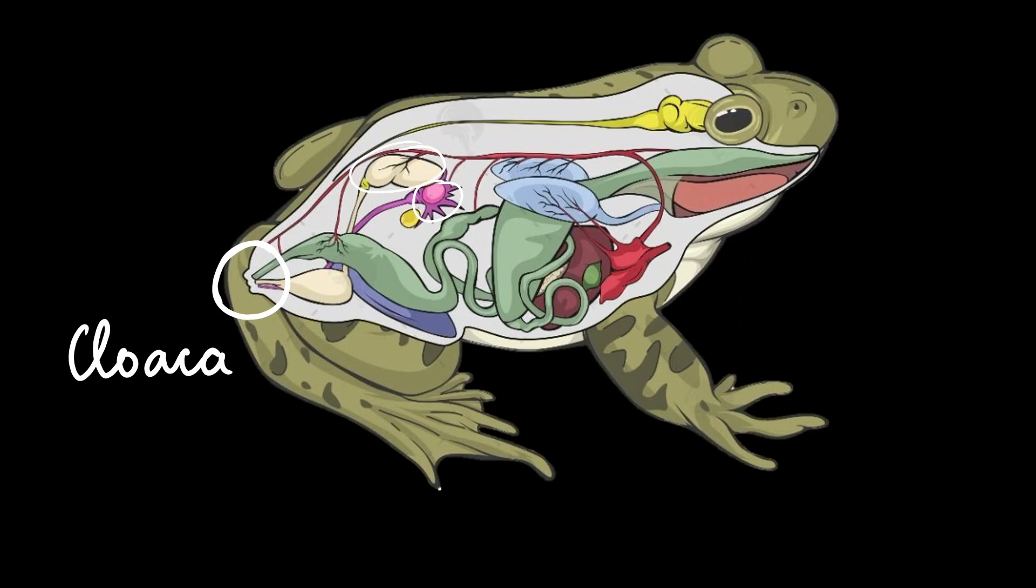This cloaca is seen in all organisms like fishes, reptiles, birds, and it's only when vertebrates started coming into the picture there was a clear separation between the digestive, urinary, and the reproductive systems.